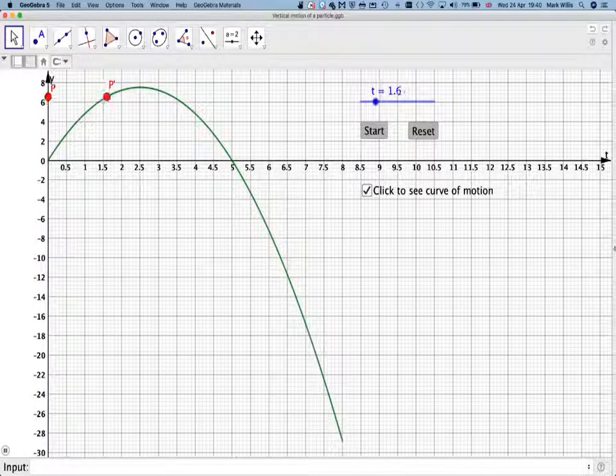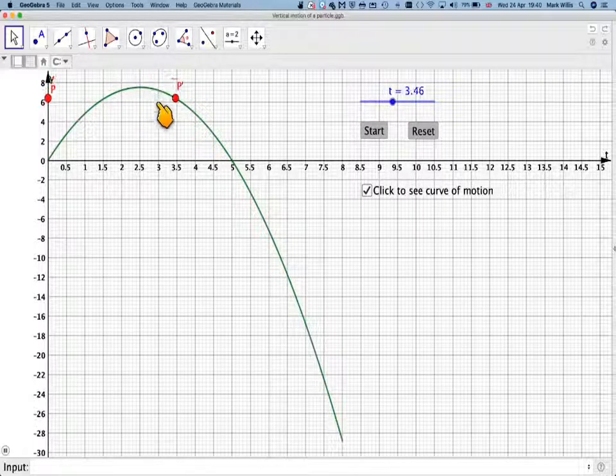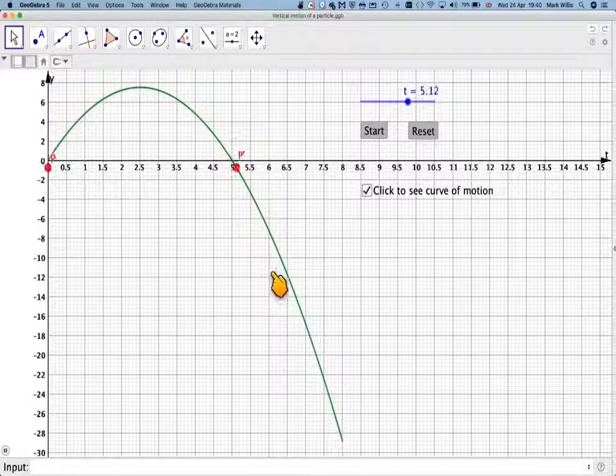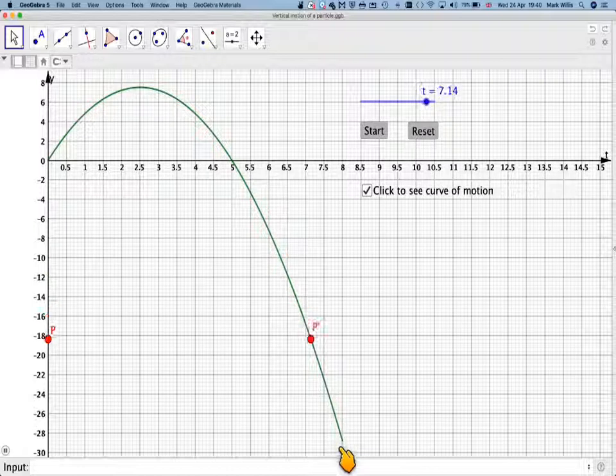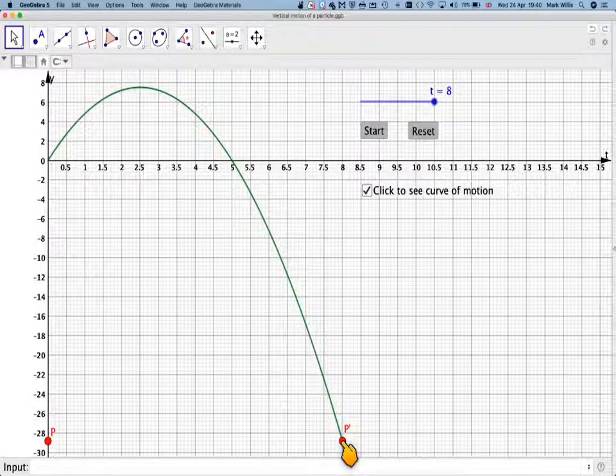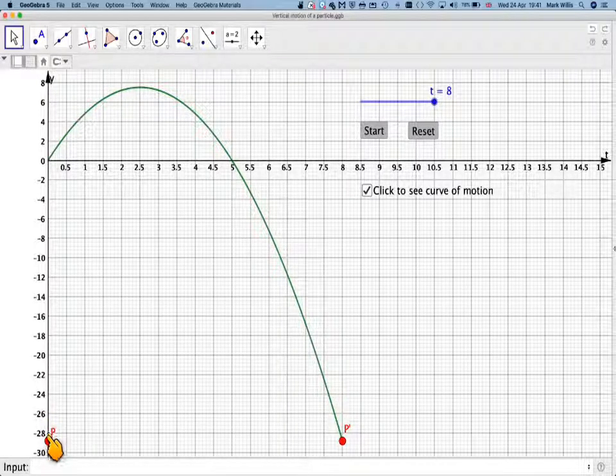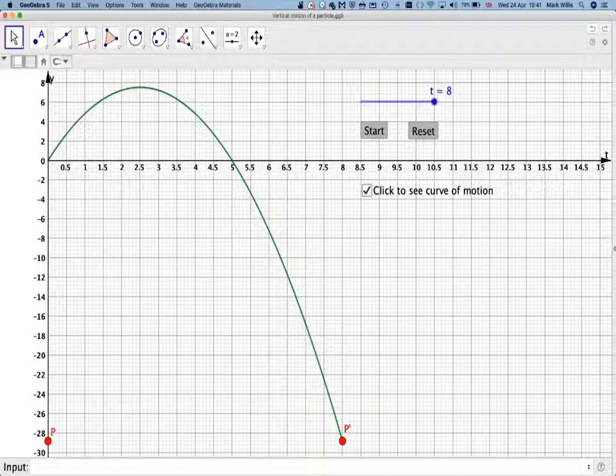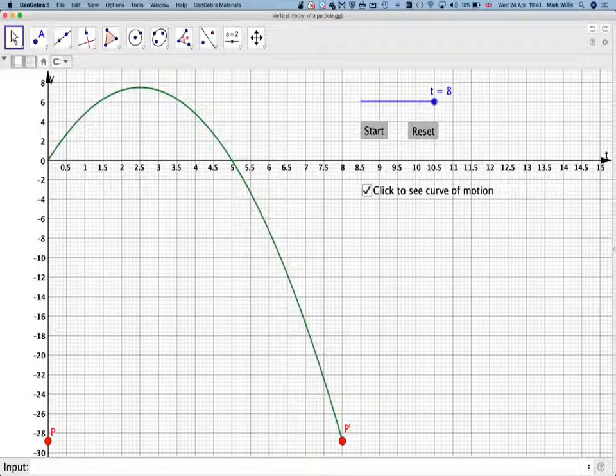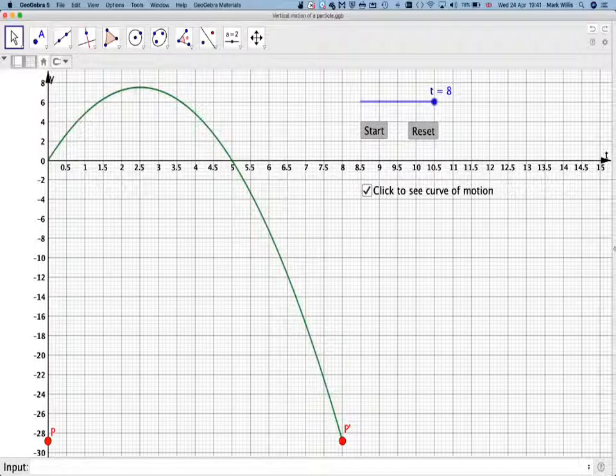If we press the start again, we'll see it goes up, hits its maximum point here, and then comes back down again, and it will stop here. So we can actually see the answer to the second question here. The maximum distance from O is going to be this point here. However, of course, we don't have, in an examination, the advantage of some sort GeoGebra app.